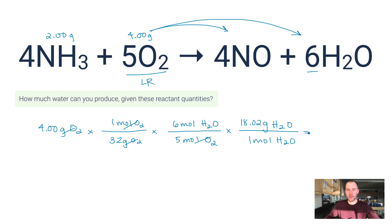18 is probably just fine as well. Let's do one more calculation. 4 times 6 times 18.02, divided by 32, divided by 5, gives me 2.70 grams of water.